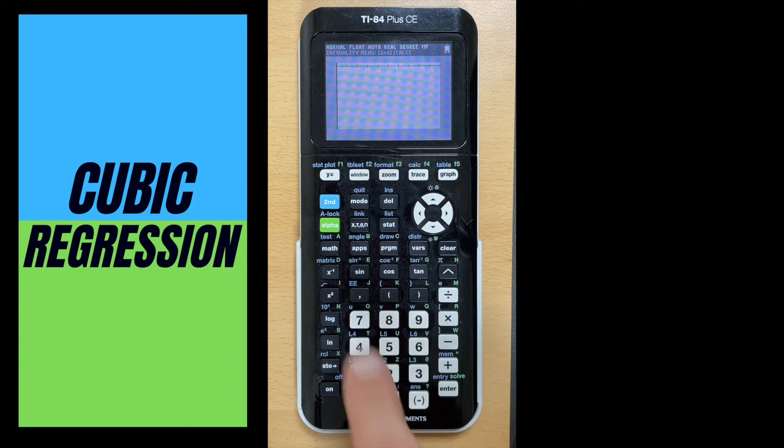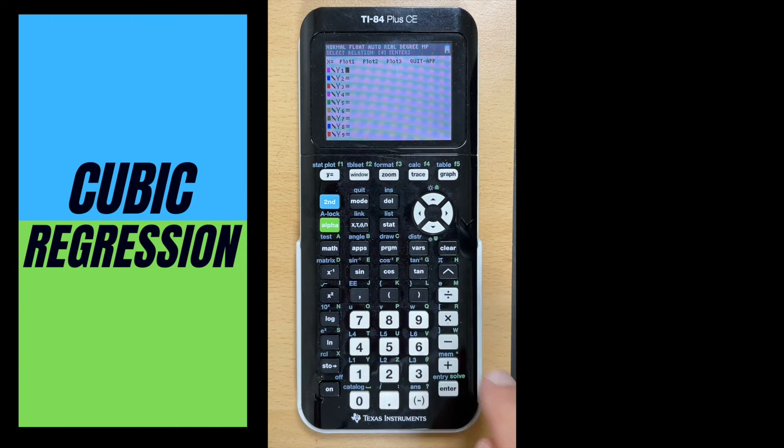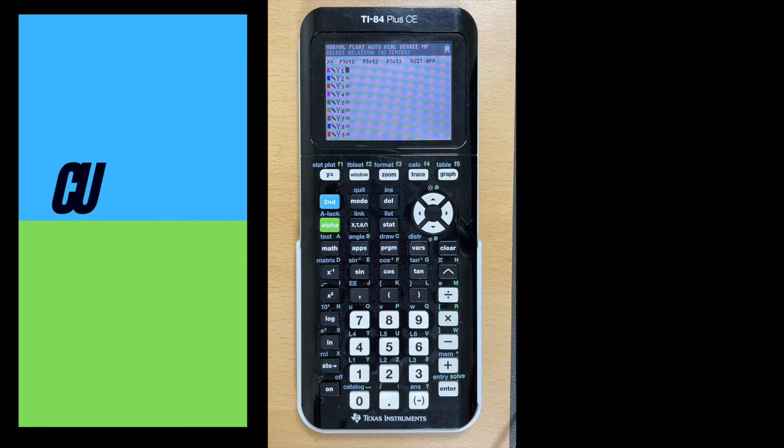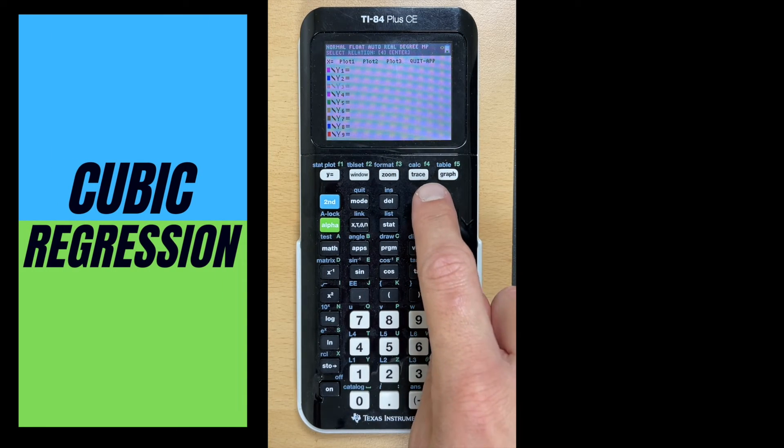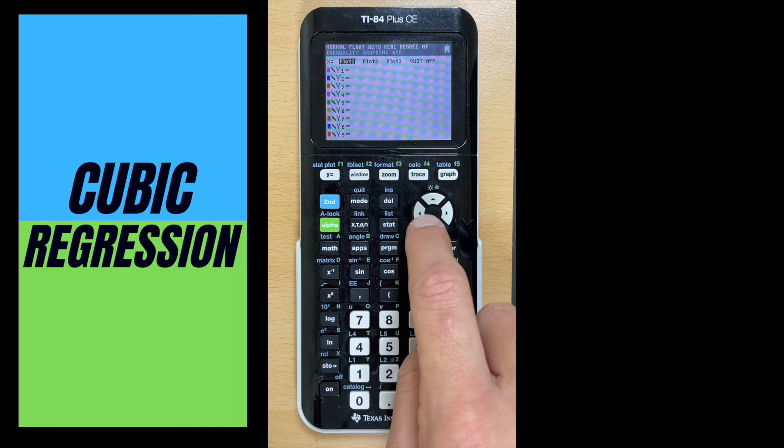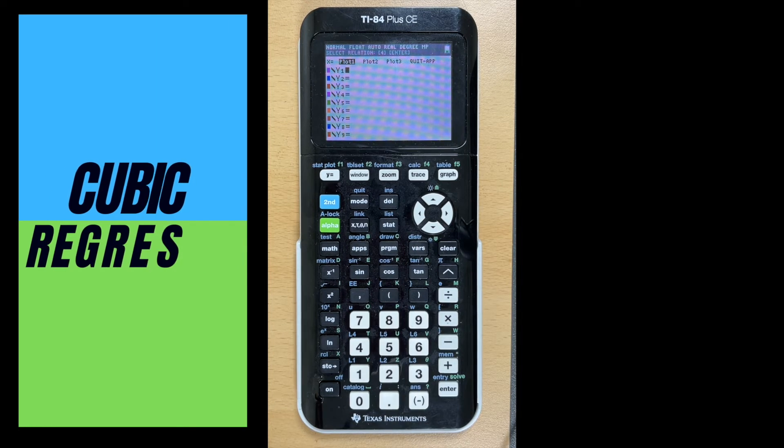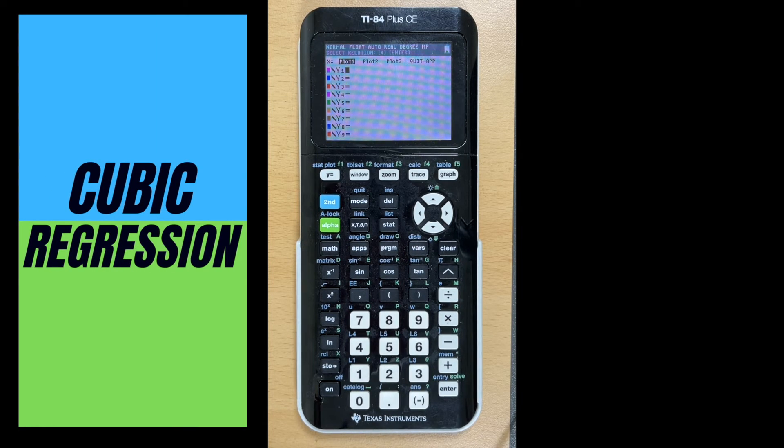Anytime we're working with scatterplots, we always want to make sure, let's go back to y equals. Across at the top we see plot. Right now, plot 1 is not highlighted. I want to go up to it and hit enter. Now see how plot 1 is highlighted black. That means I've turned it on. Now when I hit graph, there's my scatterplot.